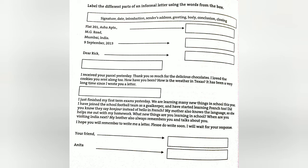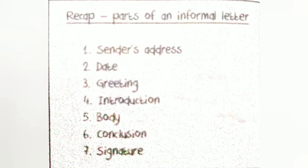We will write the reply letter from Rick to Anita. It will be an informal letter written from Rick's perspective. Rick will thank Anita for the letter and try to answer all the questions she has asked. He will write his address and date in the top left corner, then greet Anita, and write the introduction, body, and conclusion paragraphs. In the end, he will write the closing and put his signature.